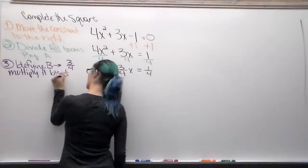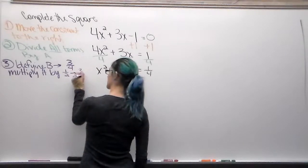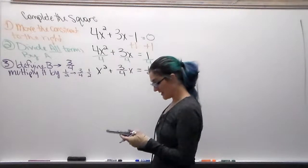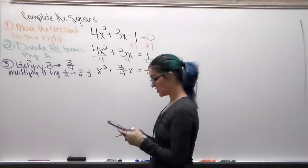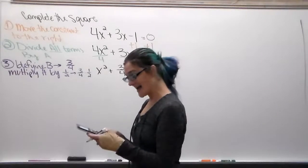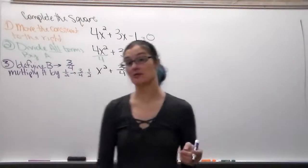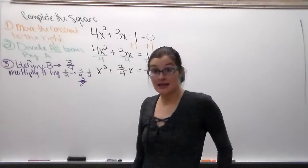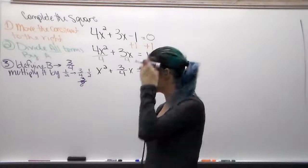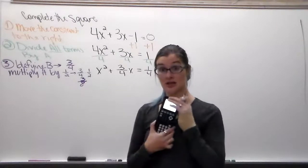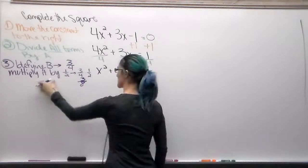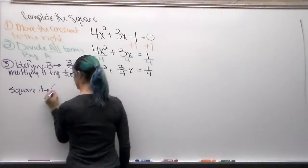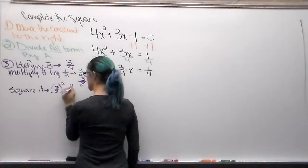Multiplying by 1/2 gives us (3/4) × (1/2). You can type that straight into the calculator: 3 ÷ 4 × 1 ÷ 2 gives 0.375. On a TI-83 or 84, press Math, Enter, Enter and it turns it back into a fraction: 3/8. Keep these things in fractions — decimals can get rounded and aren't exact. Once we multiply by 1/2 we then square it, which gives us 9/64.